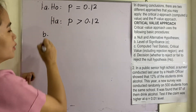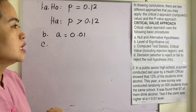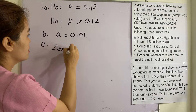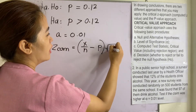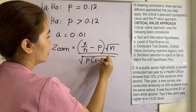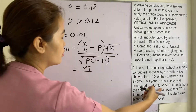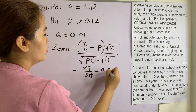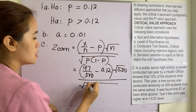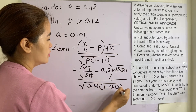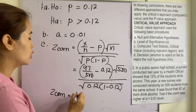Letter B: the level of significance is alpha = 0.01. Letter C: compute for the z value using the formula (x/n − p) × √n divided by √(p(1 − p)). Substituting: x = 97, n = 500, p = 0.12. So we have (97/500 − 0.12) × √500 divided by √(0.12 × (1 − 0.12)). The computed z value is 5.09.